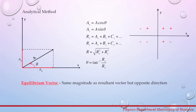The third and more precise method for adding vectors is the analytical method. For vector A, the direction is given by angle theta. In physics, we always measure angles from the positive x-axis counterclockwise. We can find the x-component and y-component of vector A. The x-component is A times cosine theta, where A is the magnitude of the vector and theta is the angle from the positive x-axis counterclockwise. Similarly, the y-component is given by A times sine theta.